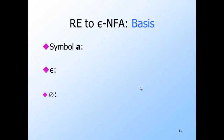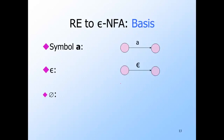The induction is on the number of operators in the regular expression. Here are the basis cases — expressions with zero operators. A regular expression without operators must be one of the basis cases. If the expression is a symbol A, the epsilon-NFA consists of only a start and a final state with an arc labeled A from start to final, accepting the language {A}. If the expression is epsilon, the arc is labeled epsilon. If the expression is the empty set symbol, we have just the start and final state with no way to get from one to the other.